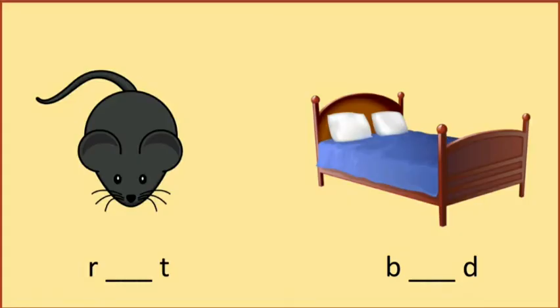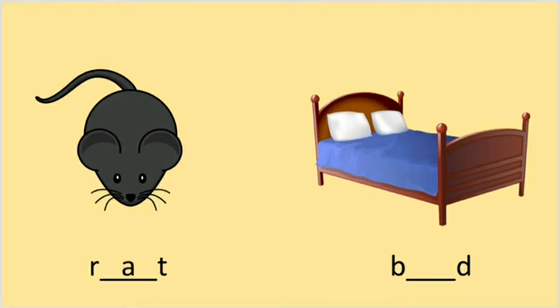Okay, so our first picture is rat. Rat. What will be the correct vowel? Rat. The correct vowel is A. R-at, rat.